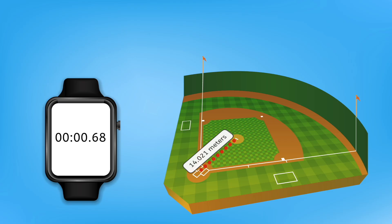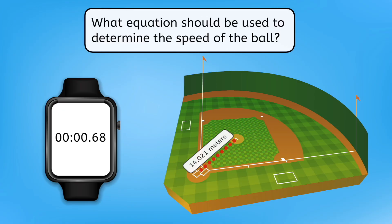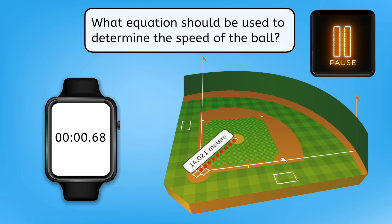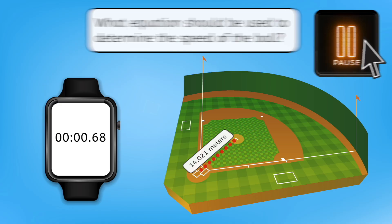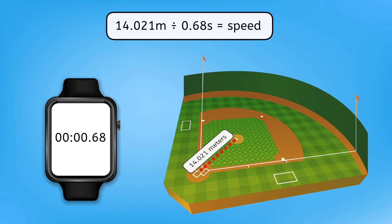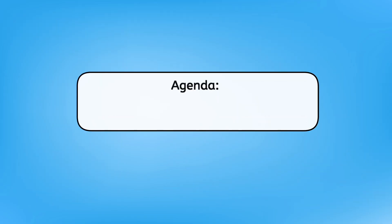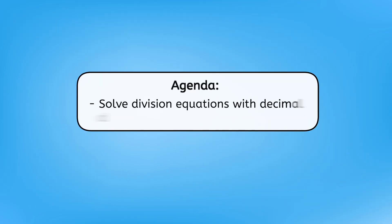Wait — meters per second. That sounds like a division problem. What equation should we use to determine the speed of the ball? Pause here to jot down your thoughts in your guided notes. We can divide the distance in meters by the time in seconds to calculate the speed of the ball. Seems like we'll need to divide some decimals to figure this out. By the end of this lesson, you'll be able to solve division equations with decimal dividends and divisors. We've got to help Mia get this hit, so let's get going.